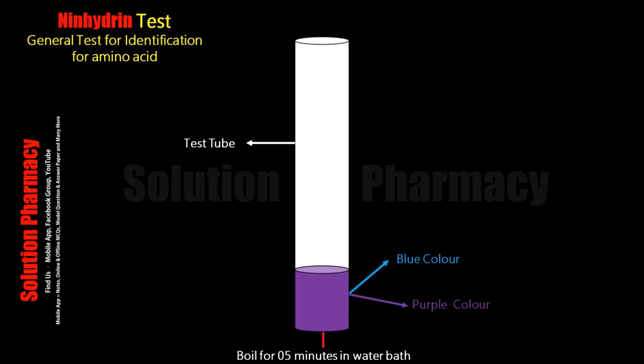The amino acid and hydrindantin react with ninhydrin under hot conditions, and an aldehyde, ammonia, and carbon dioxide are released, along with hydrindantin. Hydrindantin is the reduced form of ninhydrin. In the second step of the reaction, the hydrindantin formed in the first reaction again reacts with the ammonia released during the reaction and one more molecule of ninhydrin. After the reaction of hydrindantin, ammonia, and ninhydrin, formation of a complex takes place. The name of this complex is diketohydrin, which is also called Ruhemann's complex or Ruhemann's purple. Due to the formation of this diketohydrin complex, we observe dark blue or purple color in the test tube.